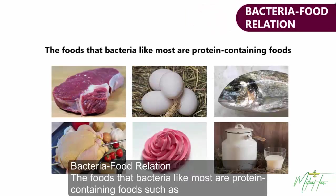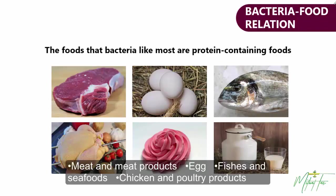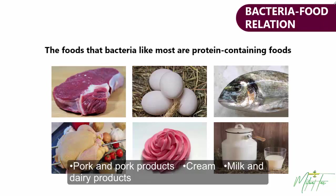Bacteria-food relation: the foods that bacteria like most are protein-containing foods such as meat and meat products, egg, fish and seafoods, chicken and poultry products, pork and pork products, cream, milk and dairy products.